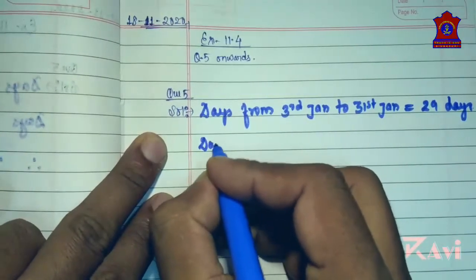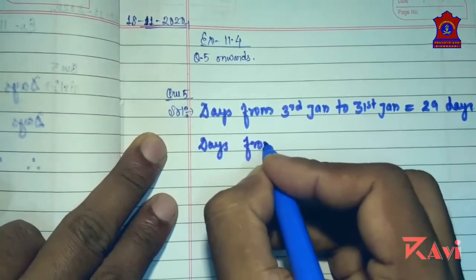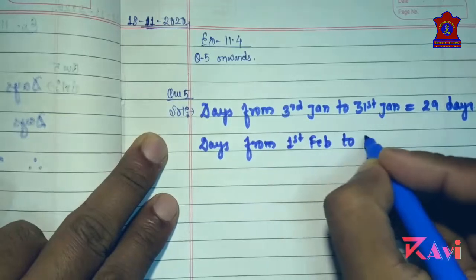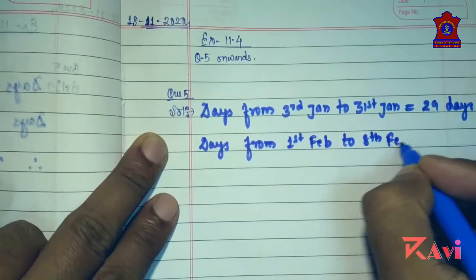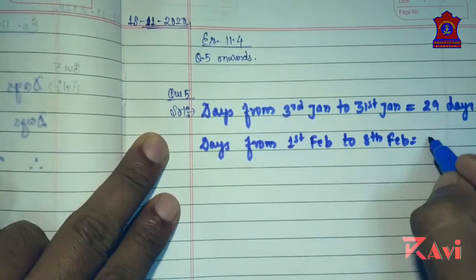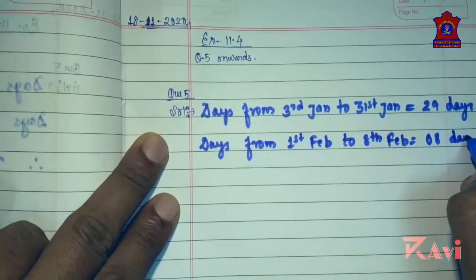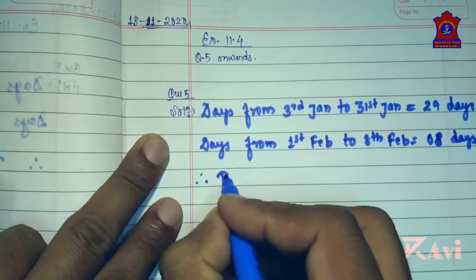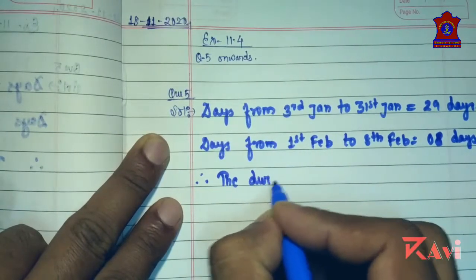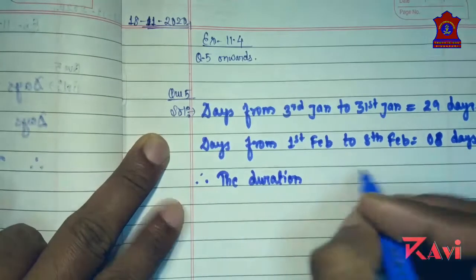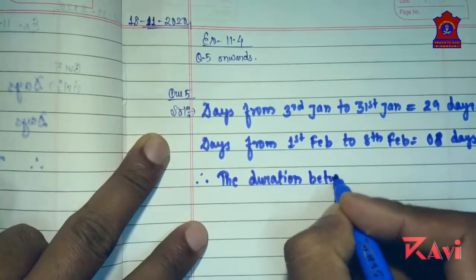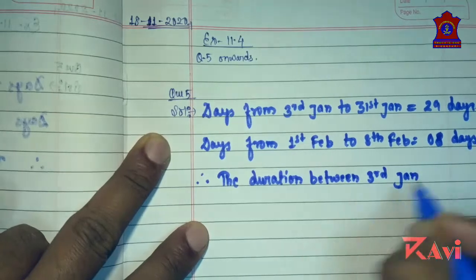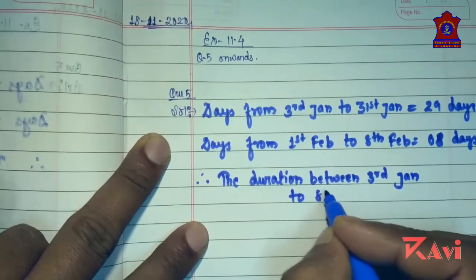And days in February — days from 1st February to 8th February. So 1st February to 8th February is 8 days. Therefore the duration between 3rd January and 8th February is calculated by adding both.